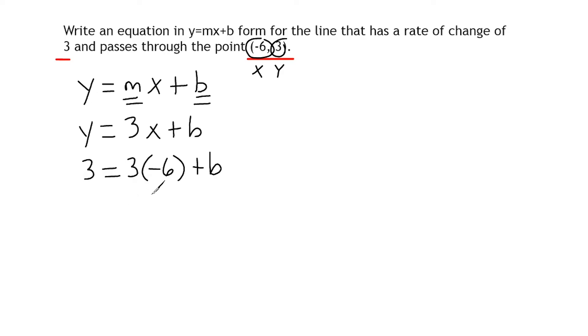So now what we can do is isolate the variable b to determine what the y-intercept actually is. What we're going to do first is simplify this equation to be 3 equals negative 18 plus b.